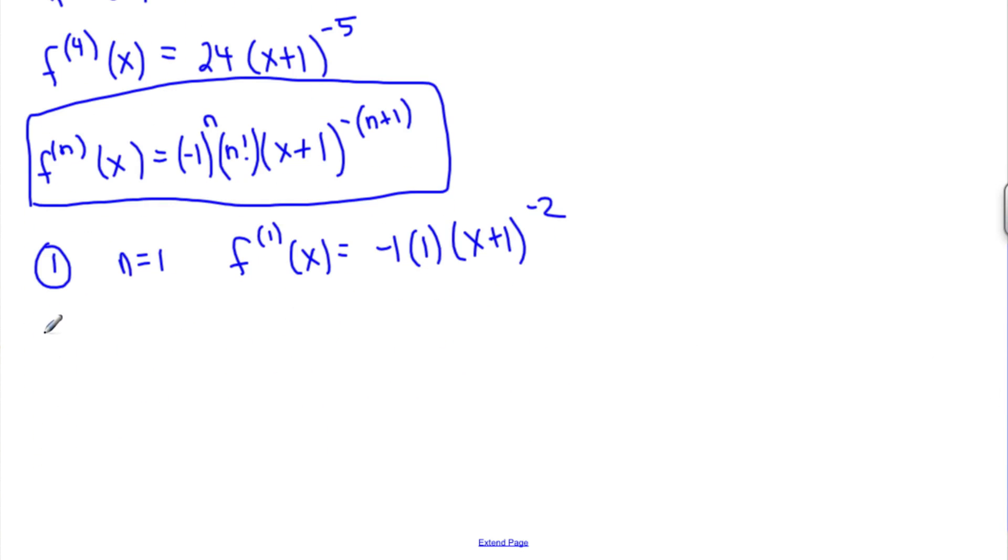Step number 2. Assume true for n equals k. So, that means the f kth derivative will equal negative 1 to the k, k factorial, x plus 1 to the minus k plus 1.